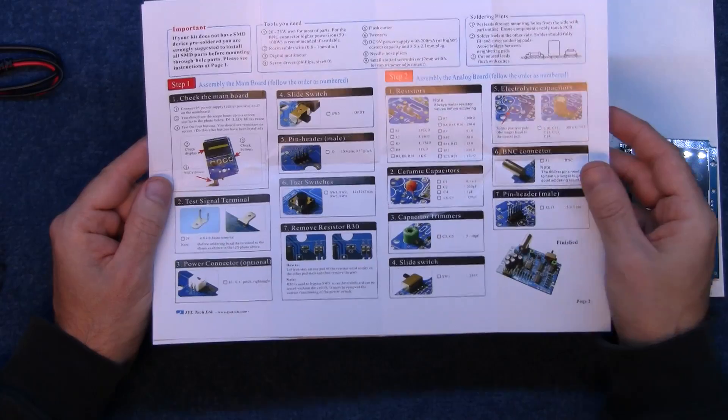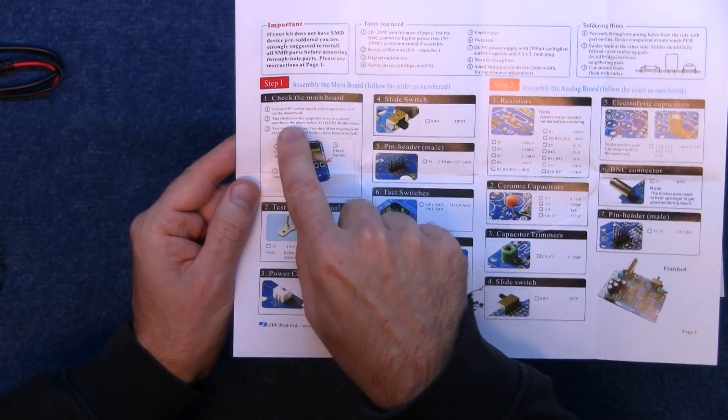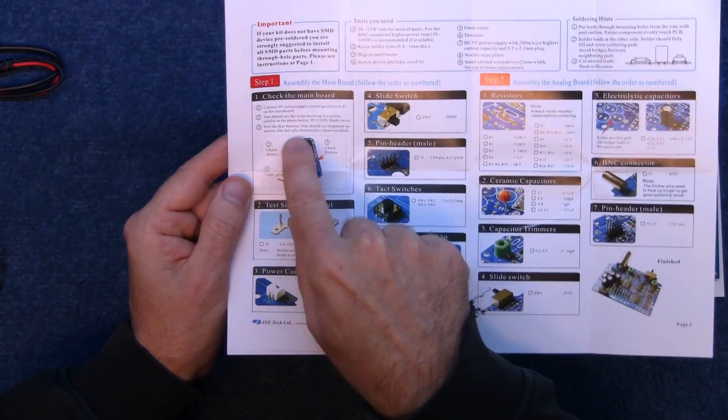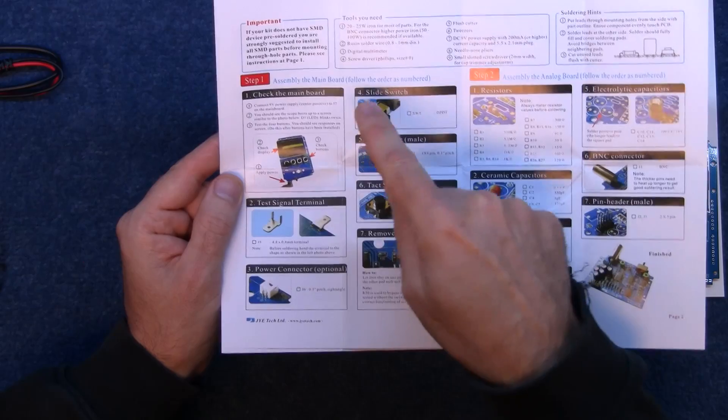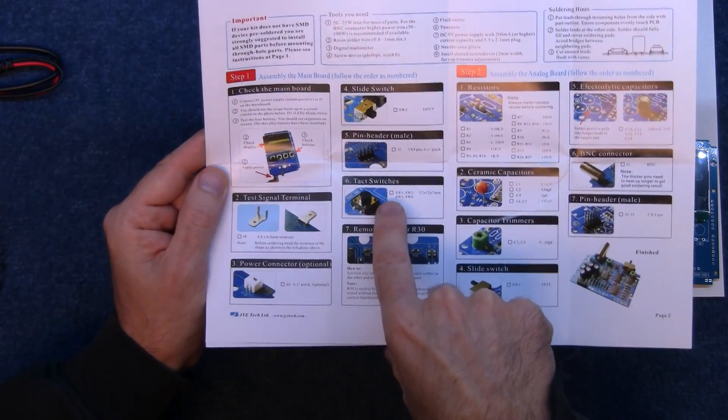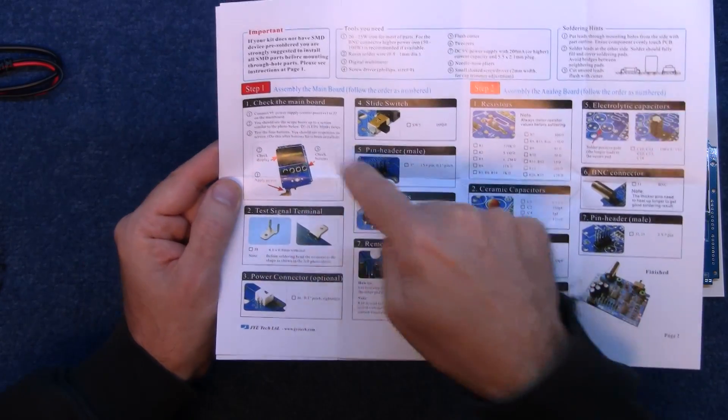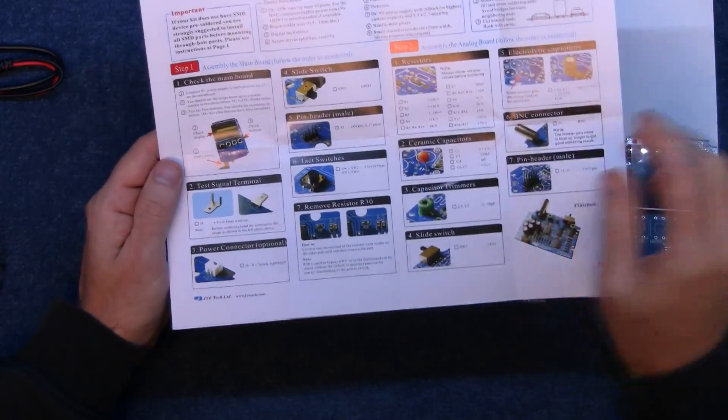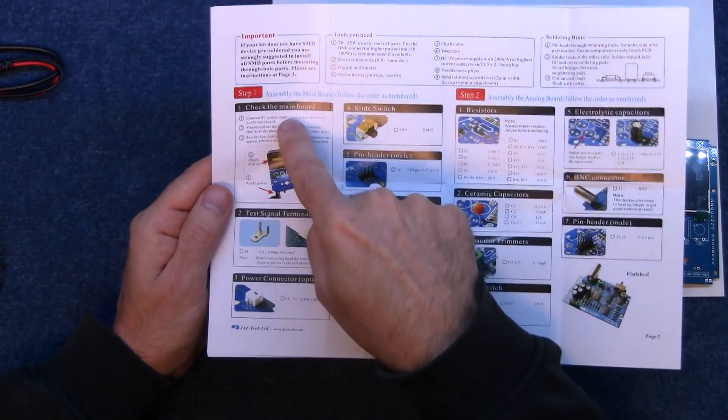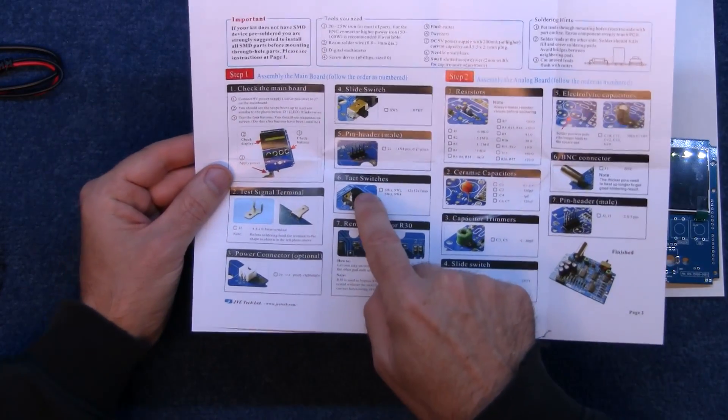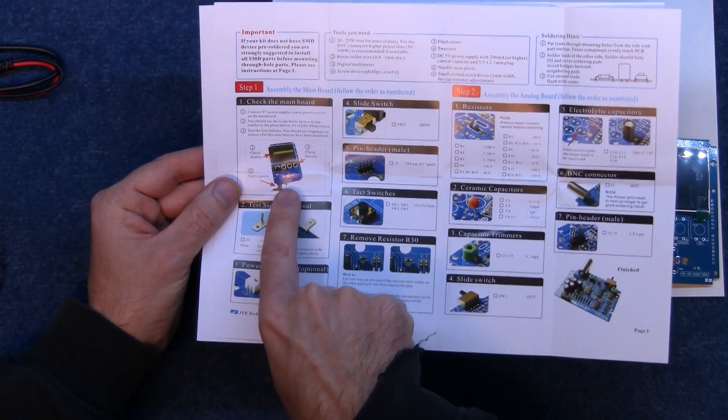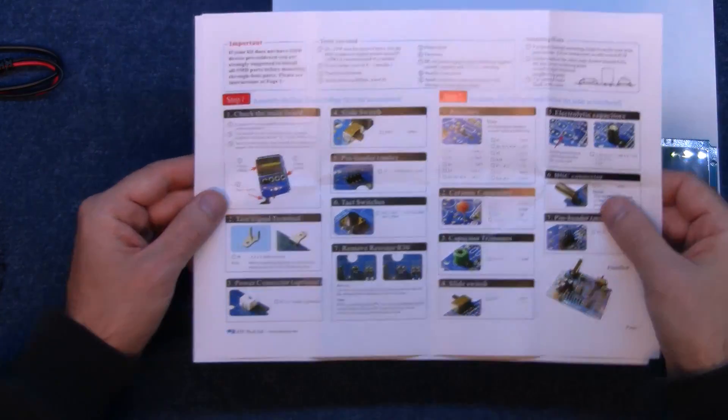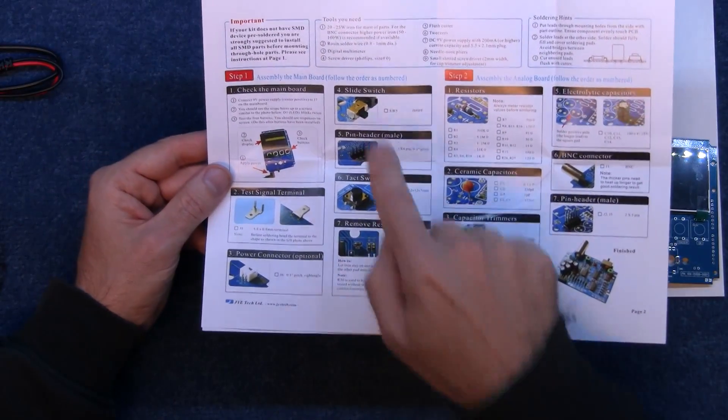Right okay step one, check the main board, connect a nine volt power supply center positive to J7 on the main board. You should see the scope boots up to a screen similar to the photo below. Test the four buttons. You should see responses on the screen. Do this after the buttons have been installed. Oh right okay, number six install the buttons. Number one check the unit before the buttons have been installed. That's a bit back to front that is. So why didn't they put that after there? So it looks like I'm going to have to put these pieces on first and then go back to step one. Okay I'm going to put these pieces on and then when I get to number six I'll go back to number one and check that. Oh look even the power switch is on there on the photo, and yet that's number four.